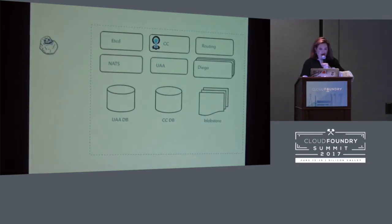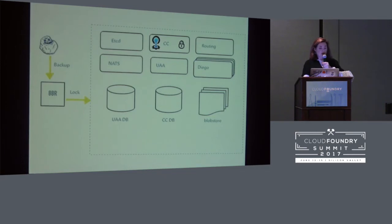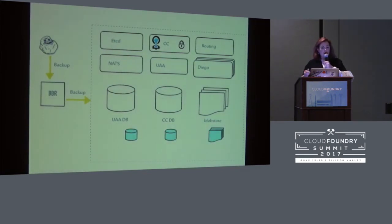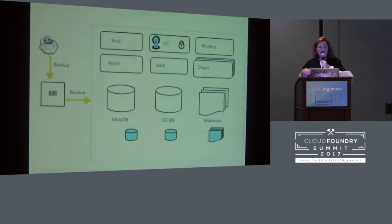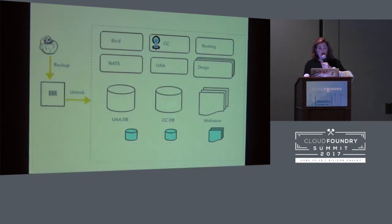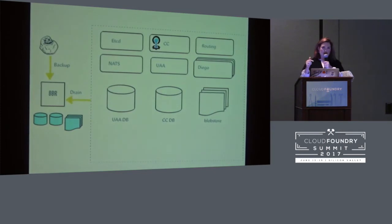So here's how BBR backs up state. The operator calls backup. Then BBR will first identify any lock scripts. The Cloud Controller implements the lock script, and what it does is stop the CF API to avoid mutating state during the backup. Then BBR will call all of the backup scripts, which will generate backup artifacts for each job in the deployment that implements backup. For Cloud Foundry, we'll end up with the UAA database, CCDB, the blob store, and some other things. Then BBR will call the unlock script. Finally, BBR will copy all the artifacts back to the jump box. And the backup is finished.